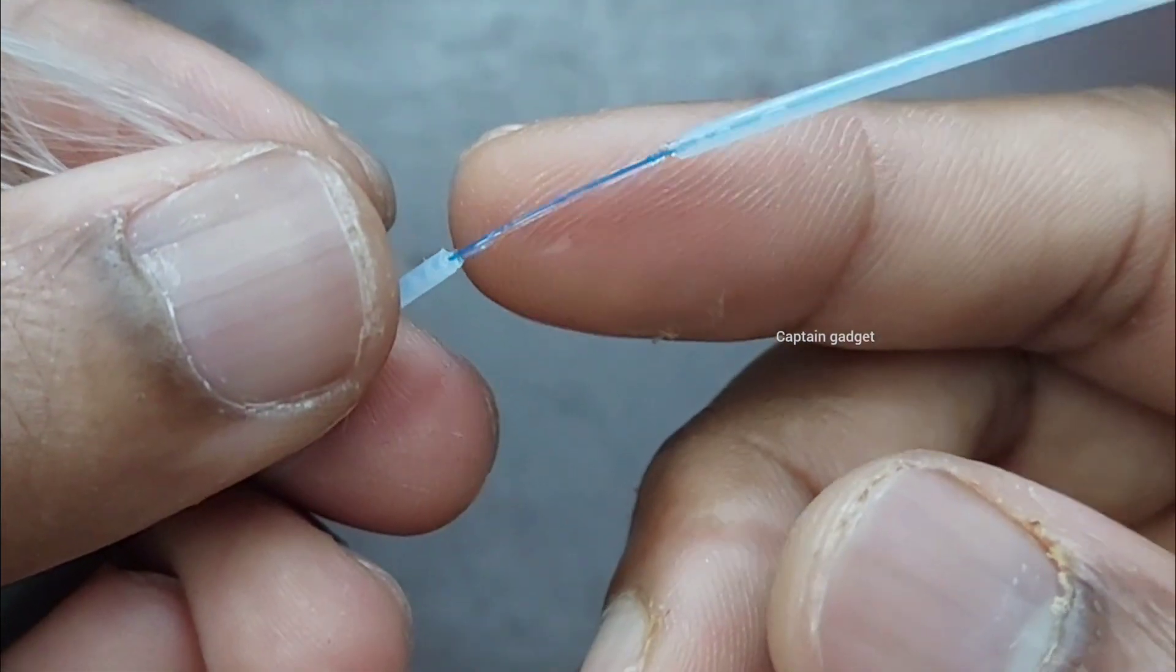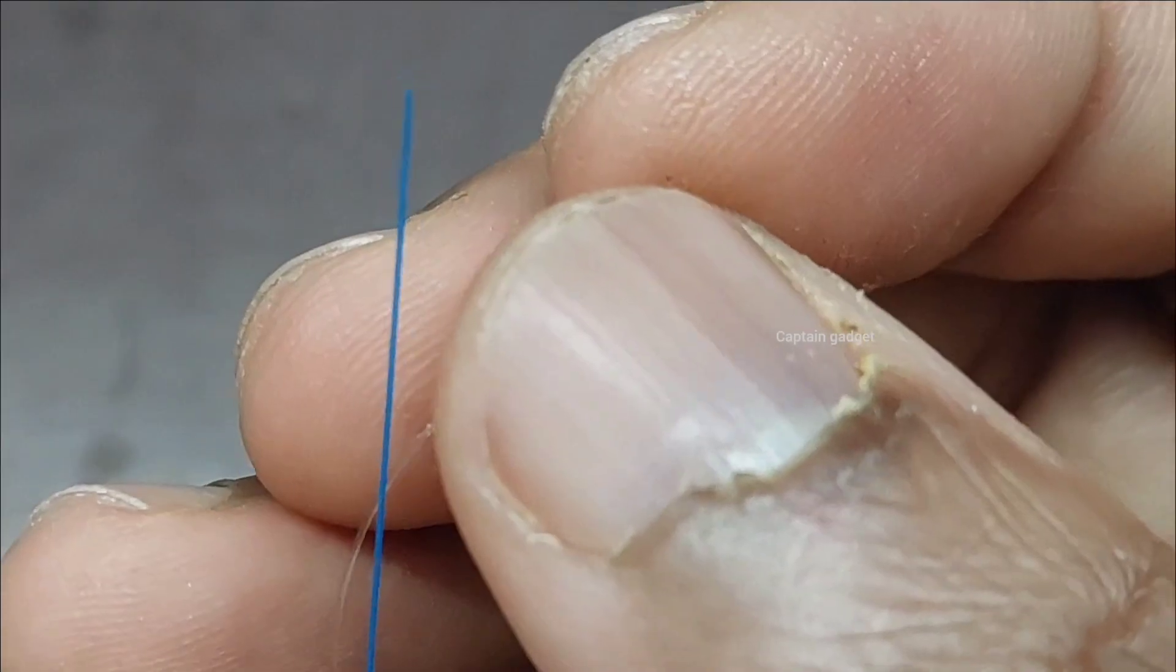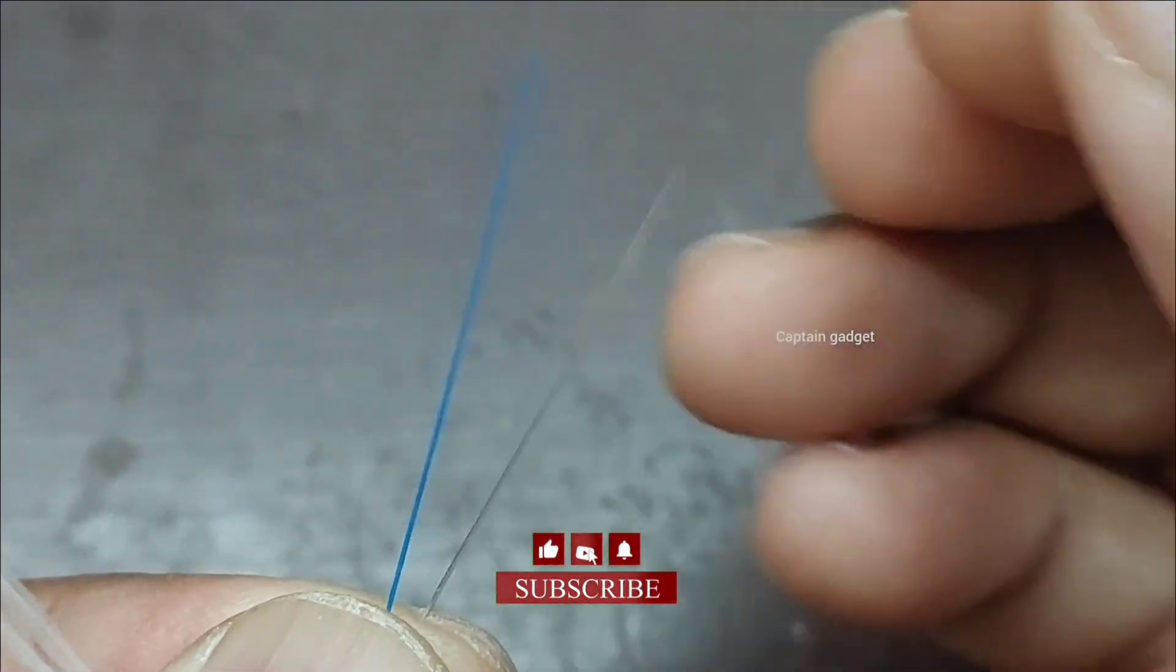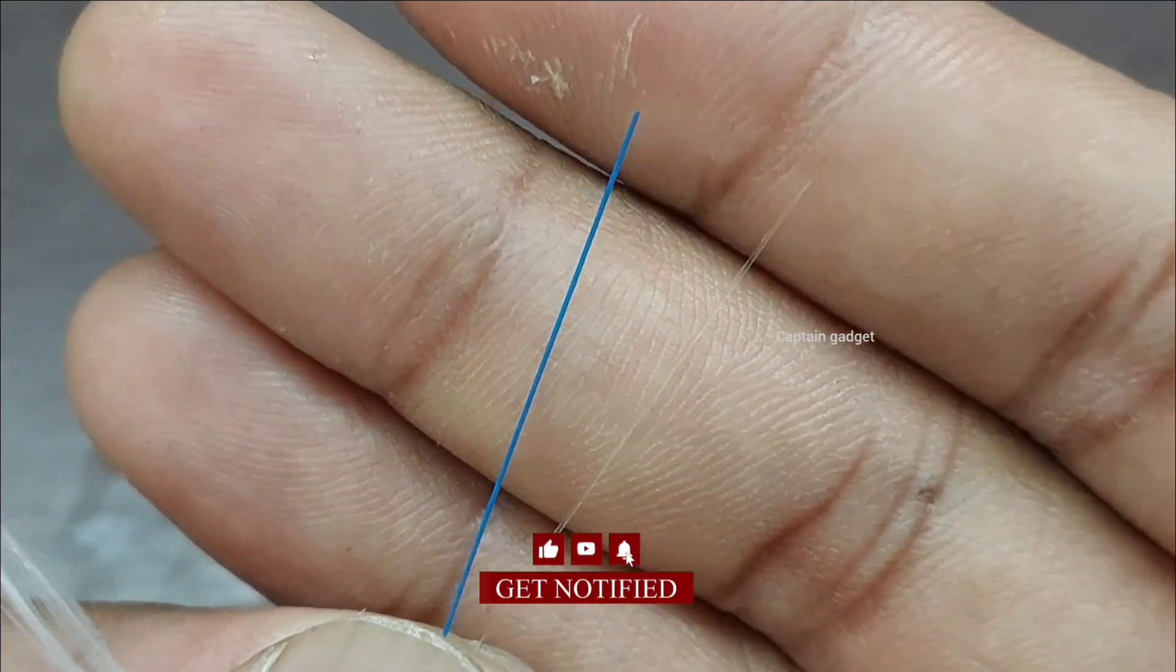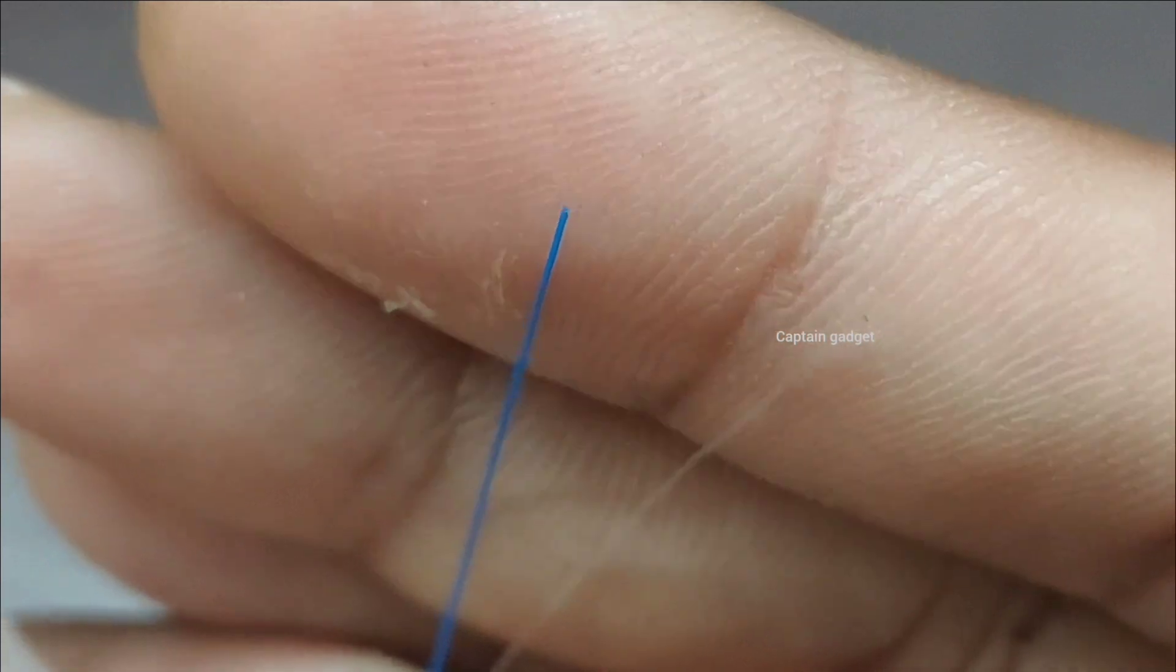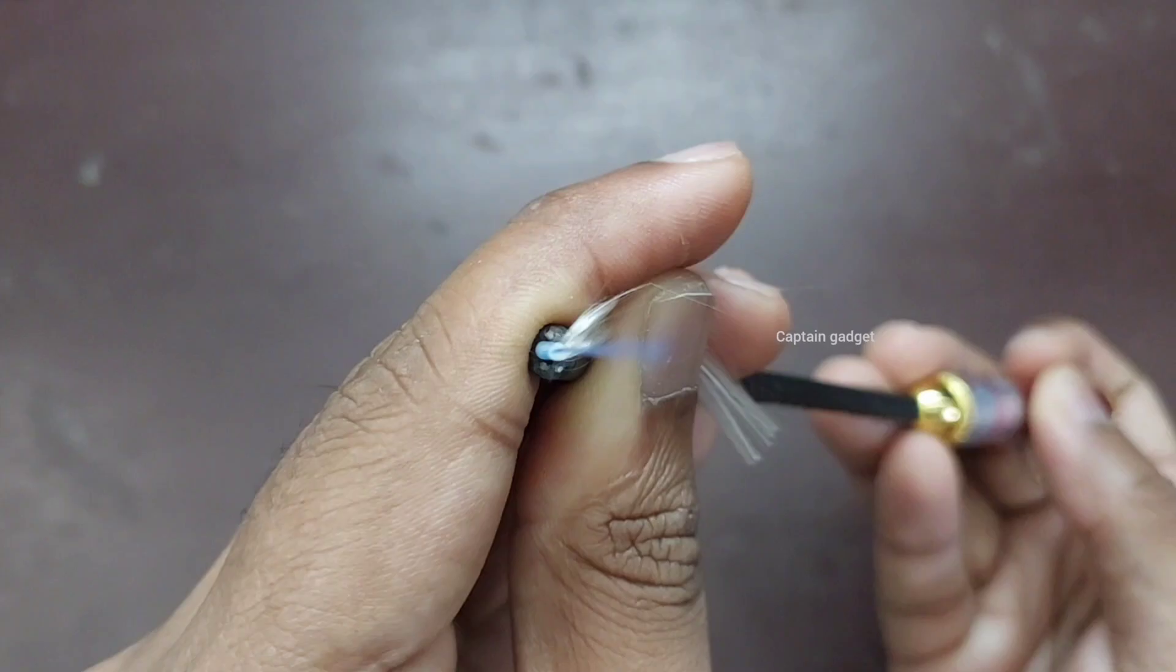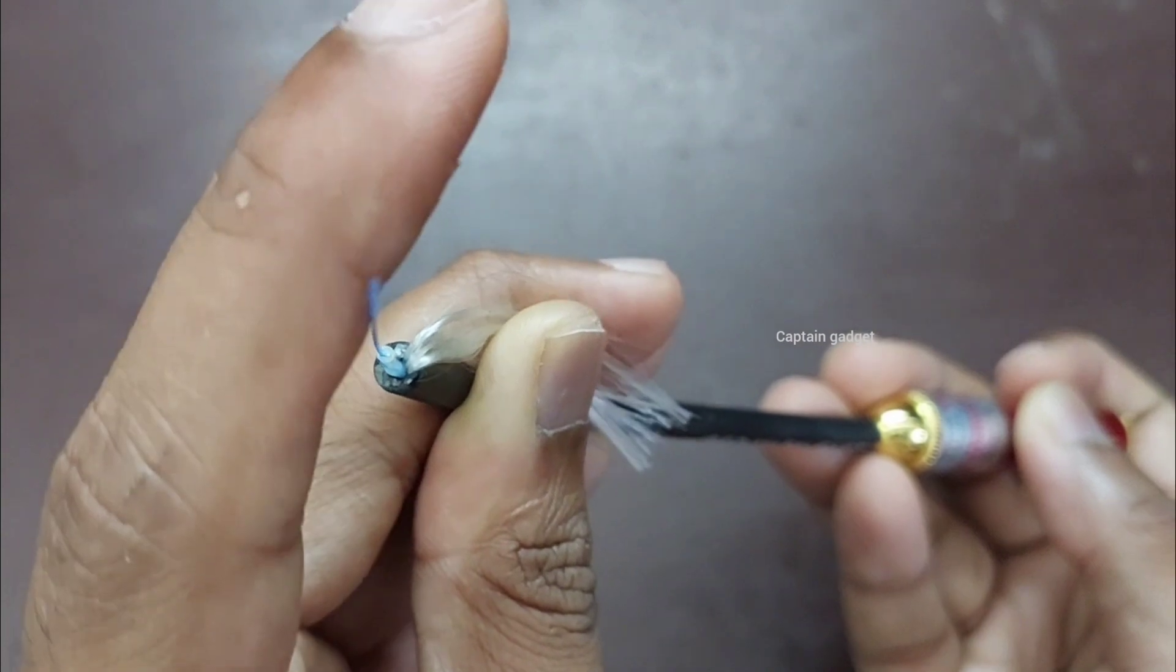You can see the gel inside, and this is the fiber. You can see how thin it is. Just look at this—isn't this amazing? Look how thin the fiber is.